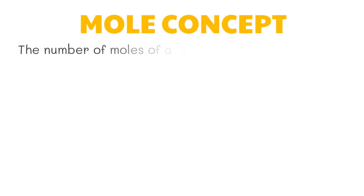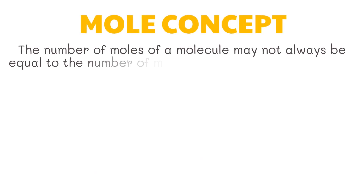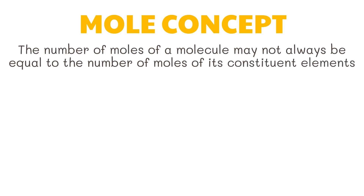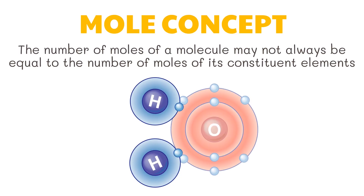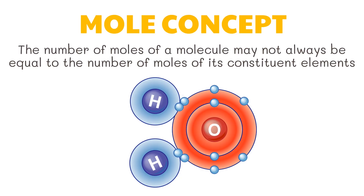The number of moles of a molecule may not always be equal to the number of moles of its constituent elements. For example, a mole of water contains N_A number of H₂O molecules. However, each water molecule contains two hydrogen atoms and one oxygen atom. Therefore, one mole of H₂O contains two moles of hydrogen and one mole of oxygen.